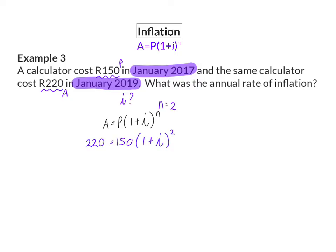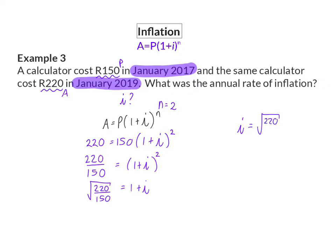To solve I, which is inside the brackets, I'm going to start off by getting rid of the 150, which is multiplied to the bracket, so I'm going to divide by 150. Then on the right I'm left with the bracket to the power of 2, so my next step is to add a square root on the left-hand side to get rid of the square on the right. To then get I completely alone, I'm going to take that square root and subtract the one that is still on the right. To write this as a percentage, I'm going to multiply by 100 and round to two decimals. So the inflation rate was 21.11% per annum.